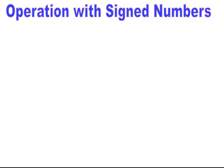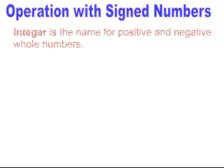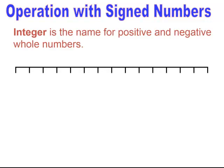Operation with signed numbers. Integer is the name of positive and negative whole numbers. If we were looking at integers on a number line, we would have the number zero in the center and the positive numbers to the right. Positive numbers will not have a sign attached to them. So if you see a number and there's no sign, it's positive.